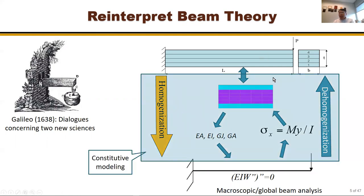In undergraduate study we don't discuss this much. We use a set of assumptions to calculate properties and directly solve the 1D problem. But in more general terms, this becomes constitutive modeling — it provides the constitutive relations for the 1D model and helps construct a new reduced model from the original 3D model.